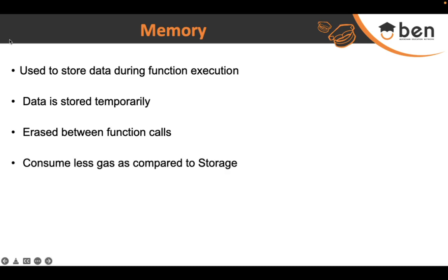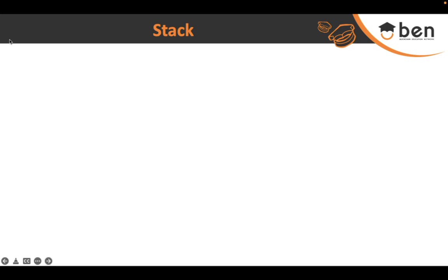Since data in memory is not permanent but temporary, it consumes much less gas compared to storage. To give an idea: a 256-bit word costs about 20,000 units of gas in storage, but only about 3 units of gas in memory. In storage, data is stored in key-value format with 256-bit slots; in memory, the slot size is also 256 bits but it uses a byte array format rather than key-value storage.